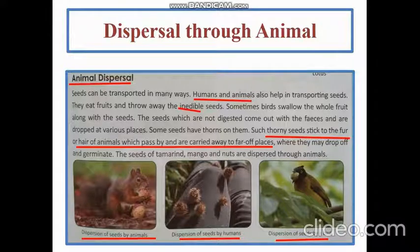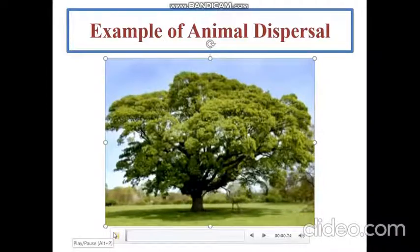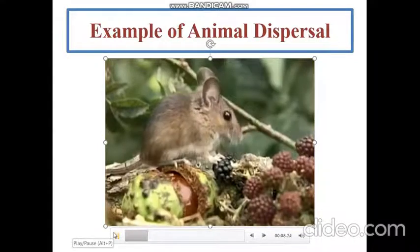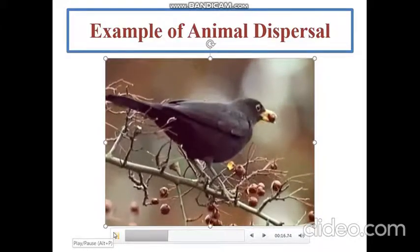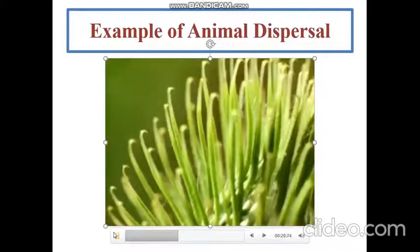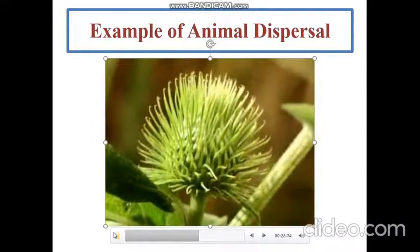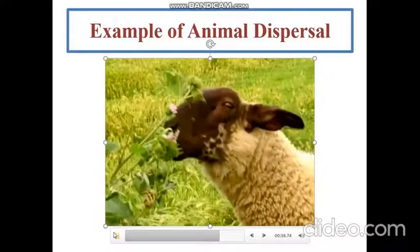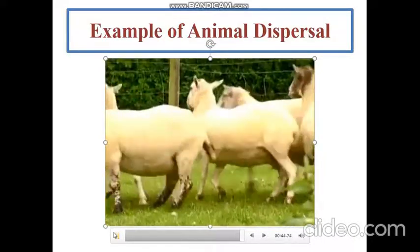Now let's watch a video for a clear understanding of dispersal through animals. You can see animals eating the fruit and throwing away the seeds. Birds also eat fruits, and the seeds, being very small and hard, come out of their body as waste. Some seeds have hook-like structures that get stuck in the hair of animal skin, and then these seeds travel and fall off in other places.